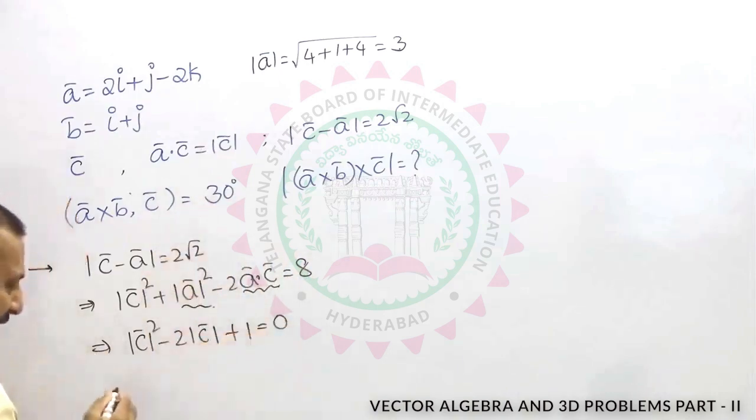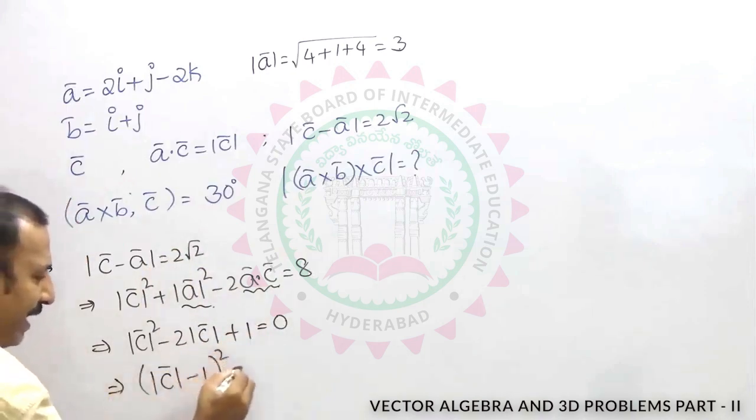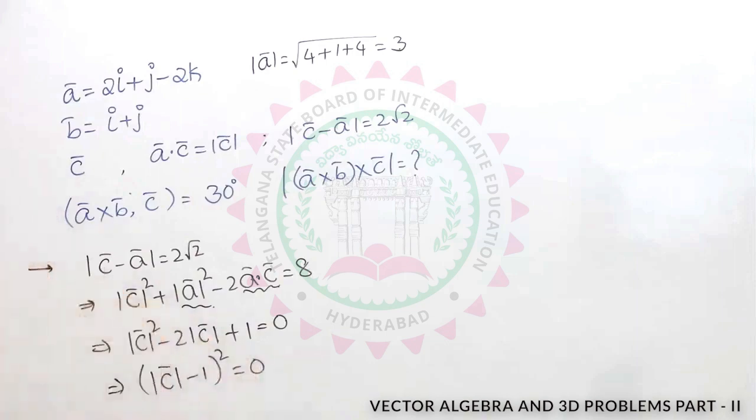So we can write it as mod c minus 1 whole square. It is mod c minus 1 whole square, that is equal to 0.